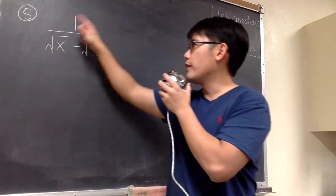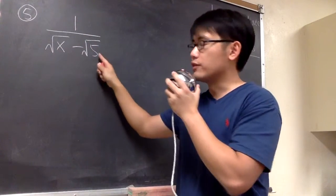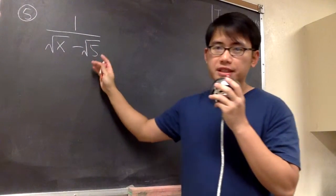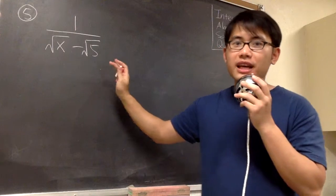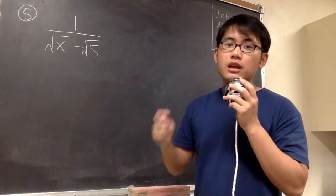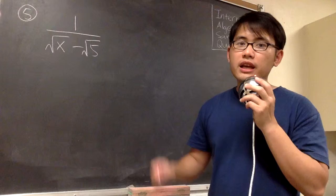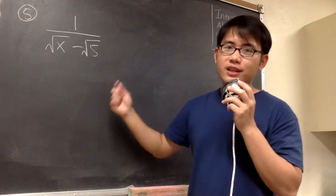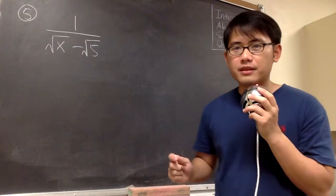For number 5, we have 1 over square root of x minus square root of 5. We see that we have square roots in the denominator, and we have two terms in the denominator. So this is the formula that we're going to use, and this process is called rationalizing the denominator.